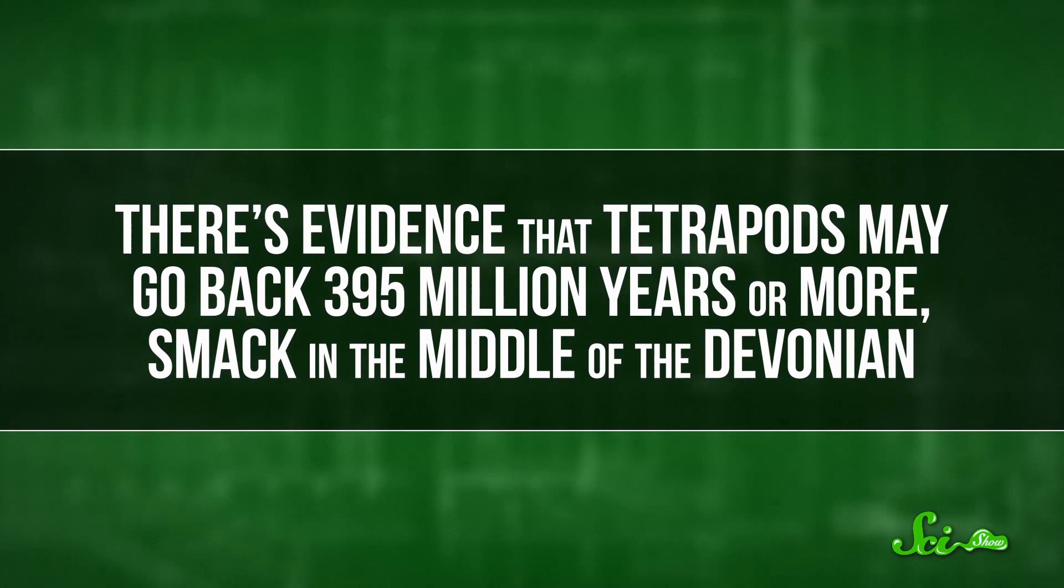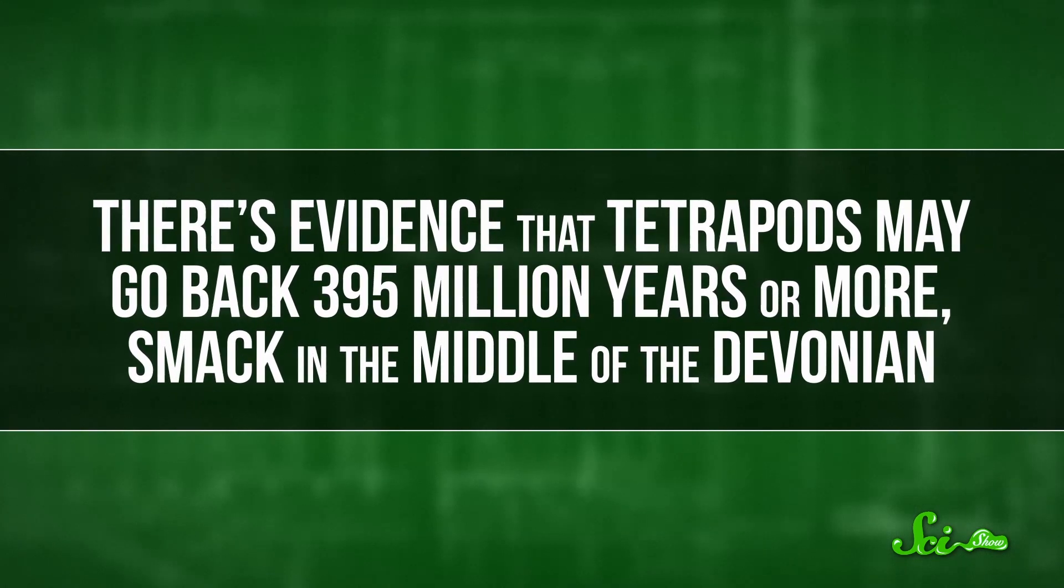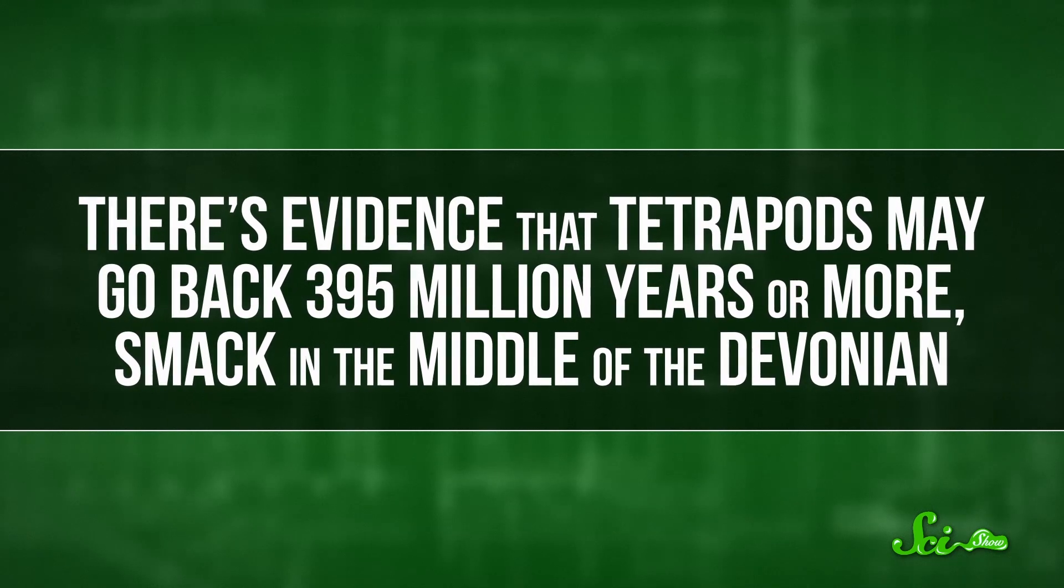In fact, there's evidence that tetrapods may go back 395 million years or more, smack in the middle of the Devonian. Which means that those fish, the ancestors of birds, mammals, reptiles, and amphibians, got around to having legs and crawling out of the ocean almost instantly on an evolutionary timescale.